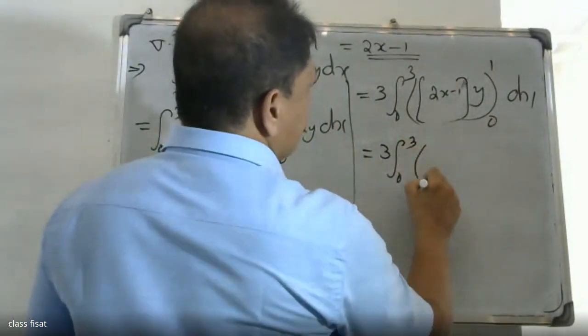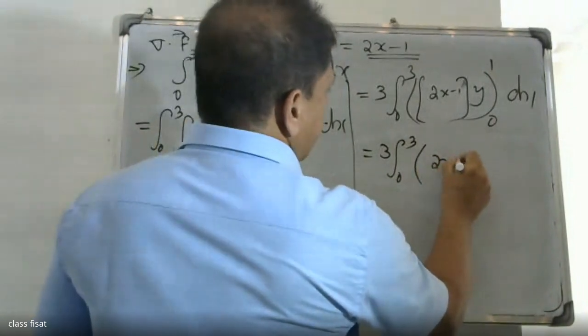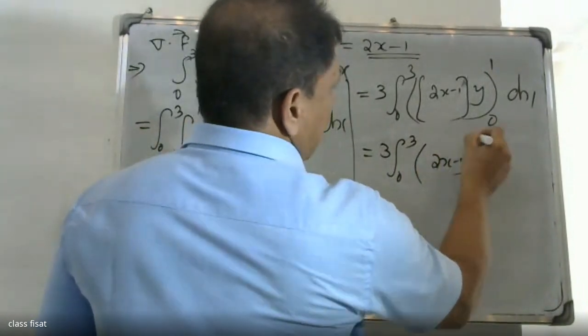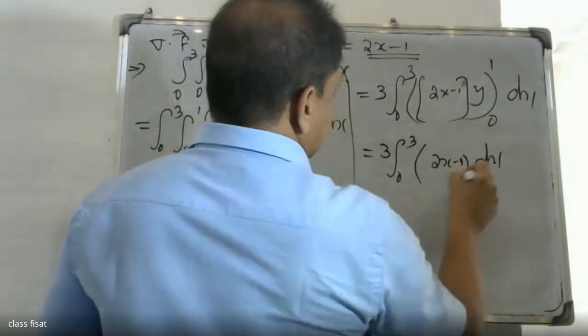That is 3 times integral 0 to 3 of (2x - 1) dx.